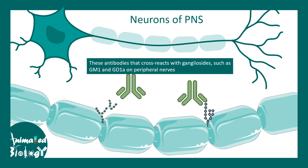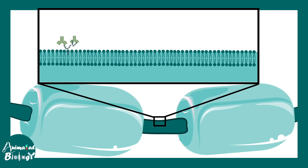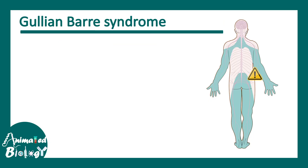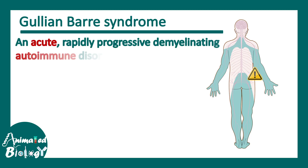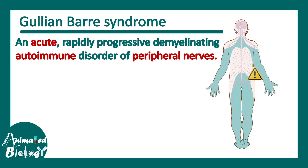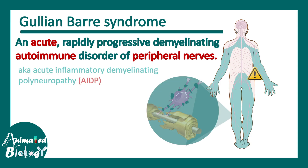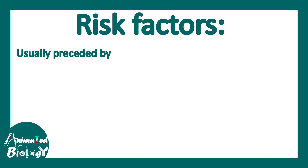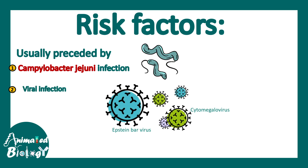These antibodies cannot target Campylobacter itself; instead they affect the peripheral nervous system. This leads to complement fixation, membrane attack complex formation, and damage to neurons. The result is Guillain-Barré syndrome — an acute, rapidly progressive demyelinating disorder that is autoimmune in nature, affecting the peripheral nerves. It is also known as acute inflammatory demyelinating polyneuropathy (AIDP). Other triggers include Epstein-Barr virus, cytomegalovirus, or rarely the influenza vaccine, but Campylobacter jejuni is the most notable pathological association.